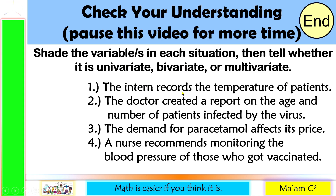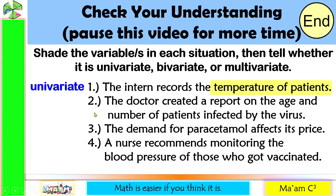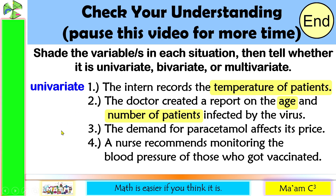Number one: the intern records the temperature of patients. We measure the temperature of patients — only one variable, so this is univariate. Number two: the doctor created a report on the age and number of patients infected by the virus. We have the age as well as the number of patients — two variables — so this is bivariate.